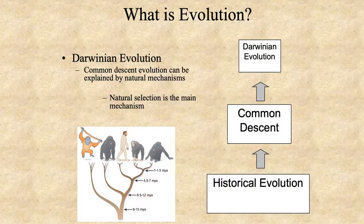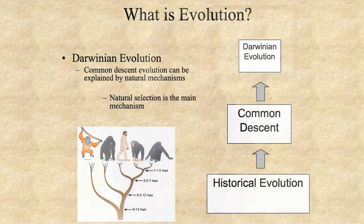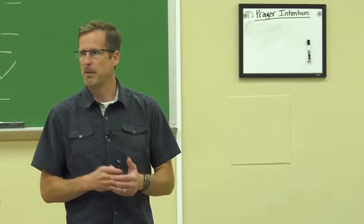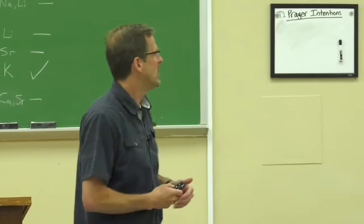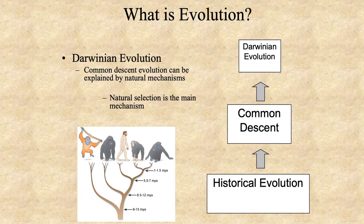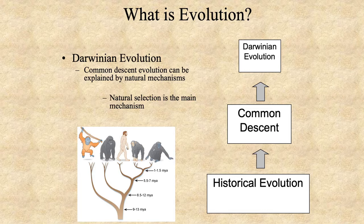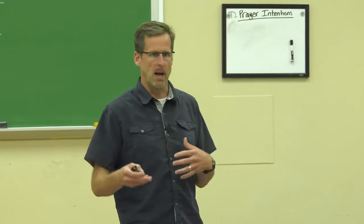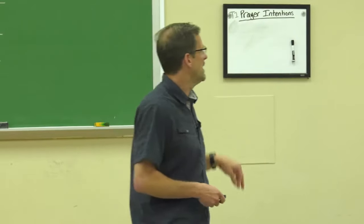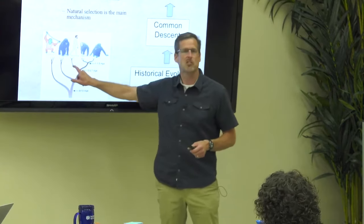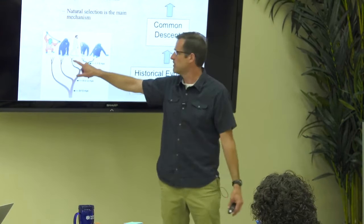The third use of the term evolution refers to Darwinian evolution. This is the level where I think most of the conflict arises, although some people have problems with all three of them. This is where you're talking about the mechanisms. Darwinian evolution is that the common descent that we just talked about can be explained by natural mechanisms. Pure Darwinian evolution would say natural selection is the only mechanism. Very few biologists believe that. Most believe that it's the most prominent mechanism, but there's other natural mechanisms as well. But the key is it's natural causes that scientists can study would explain how the common ancestor of modern humans and modern chimps split.